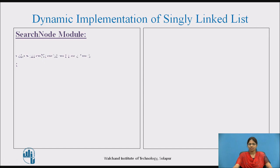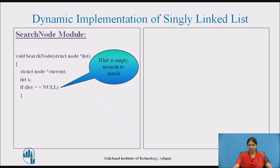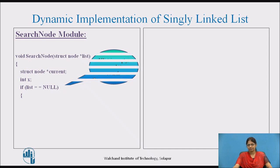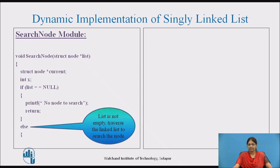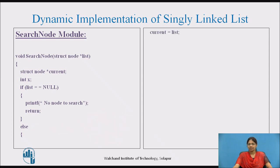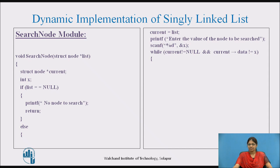Here we discuss the search node module. We declare a pointer current and a variable x. First we check if the list is null — if the list is empty, there is no node to search, and we print a message and return. Else the list is not empty, so we initialize current to list, take the value to search from the user into x, and traverse the linked list till current is not null and current->data is not equal to x.